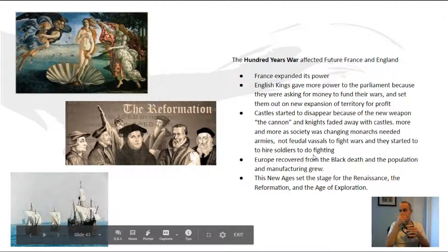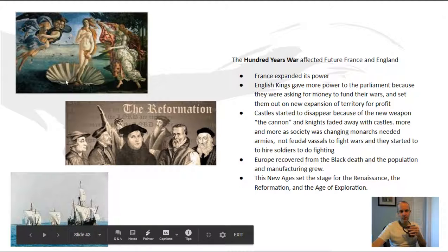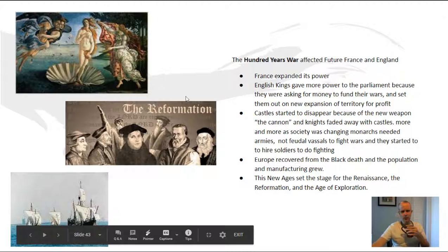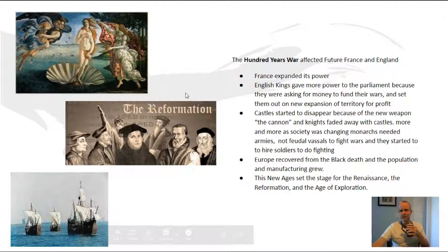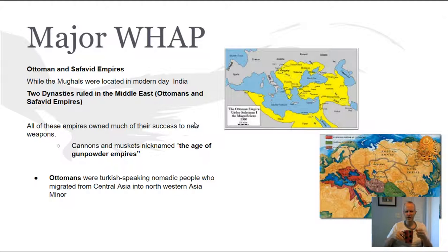Europe recovered from the Black Death and the population and manufacturing grew. There was a boom in economics — people are getting jobs and things are getting going again. The New Age set the stage for the Renaissance, the new rebirth of art. You start the Reformations — the Protestant Reformation with Martin Luther and the Catholic Reformation with the Jesuits. Then you start seeing the Age of Exploration. The Hundred Years War is basically a stepping stone of history, a turning point where Europe awakens from its past and the whole world opens up.